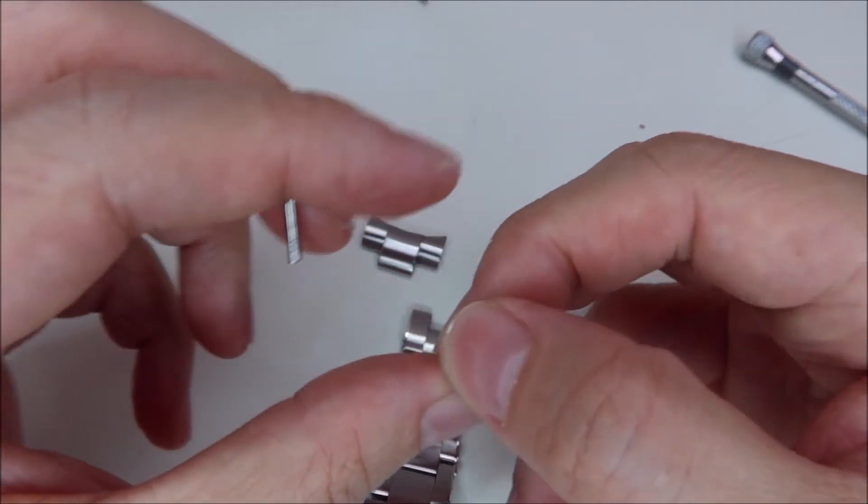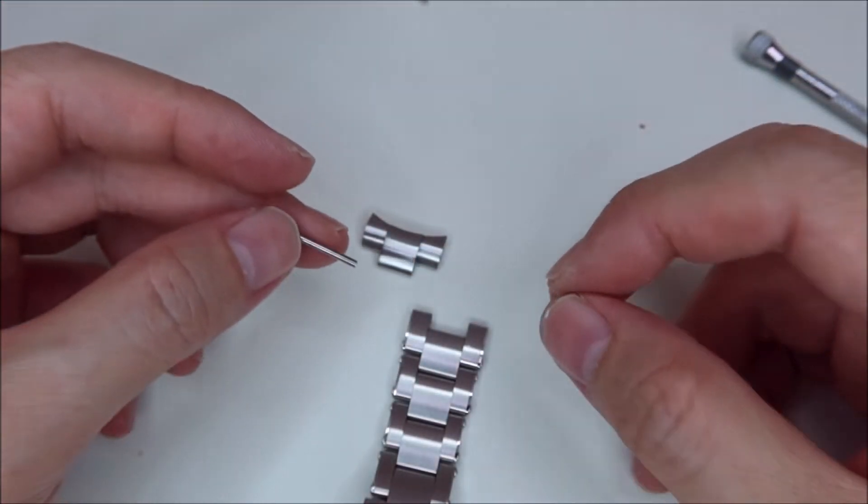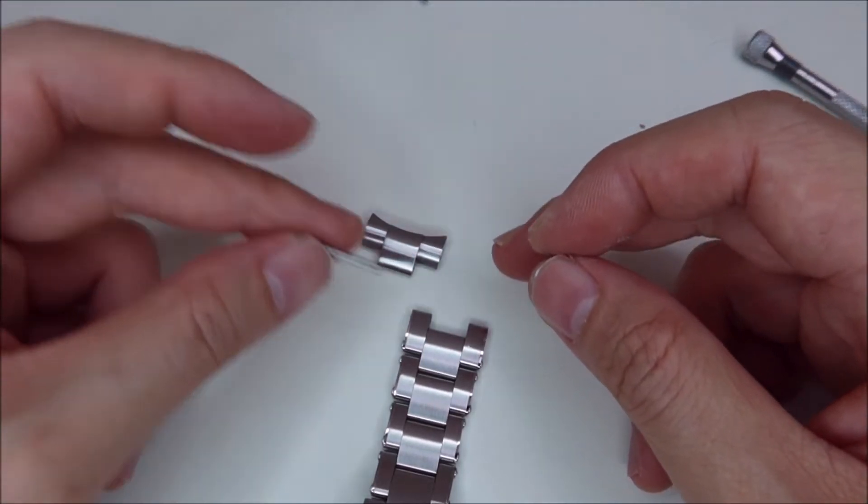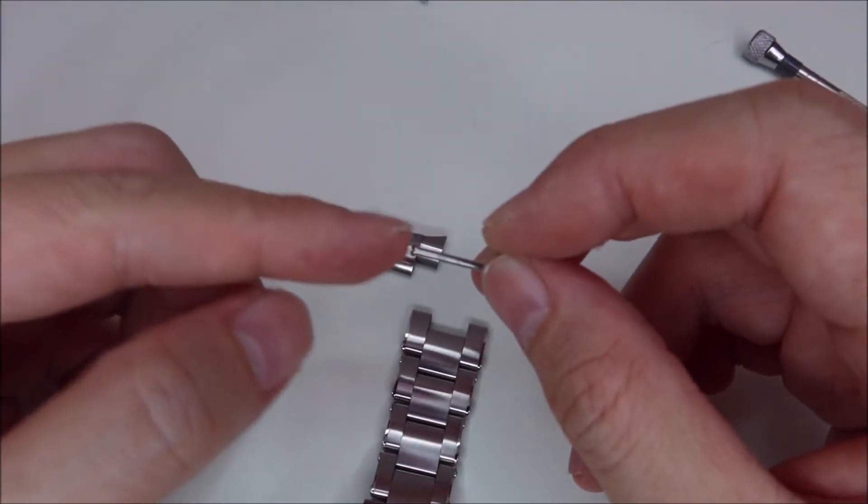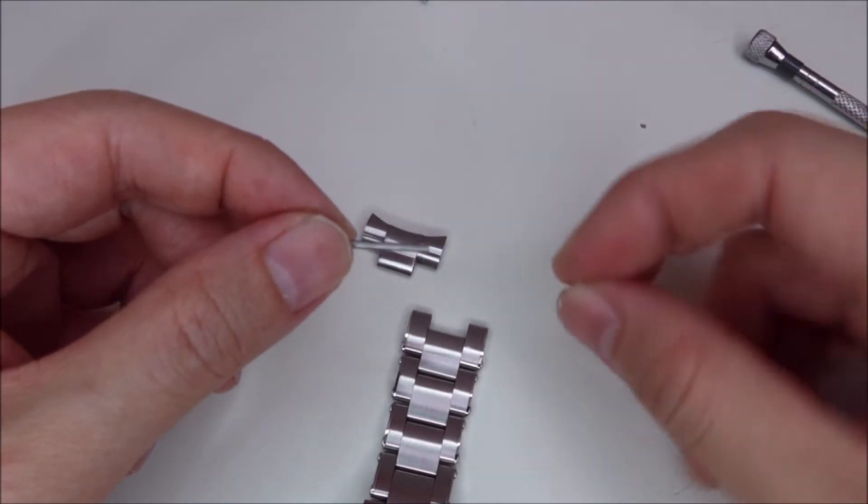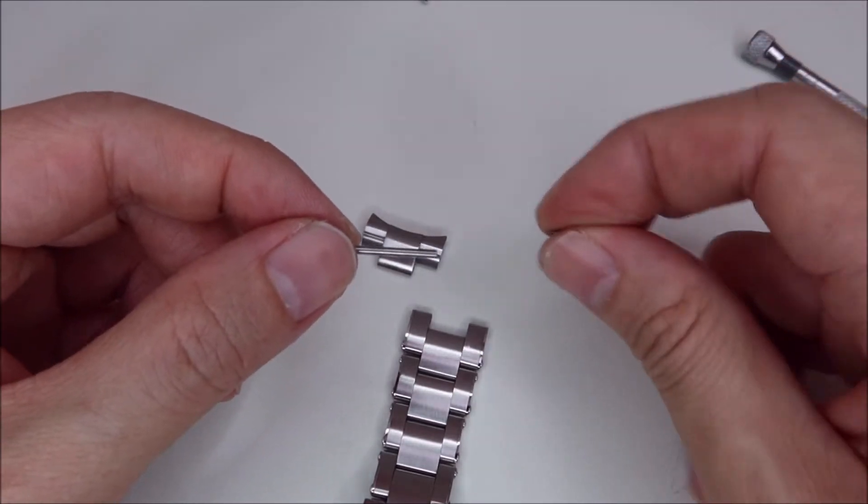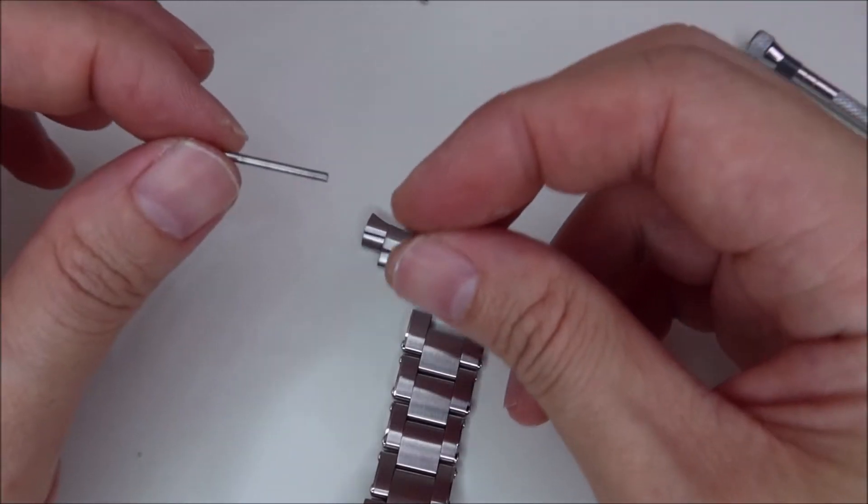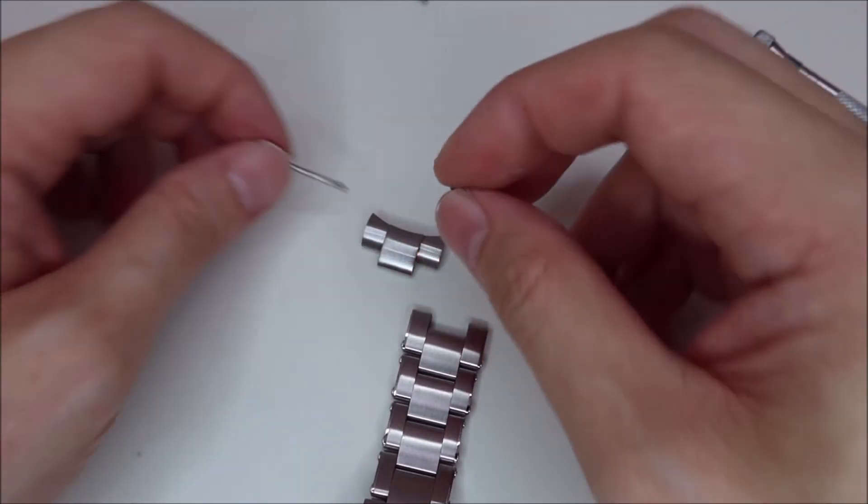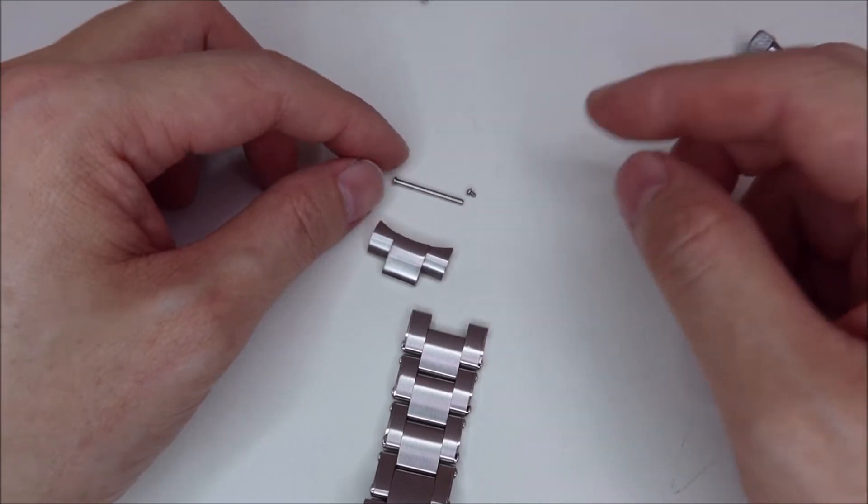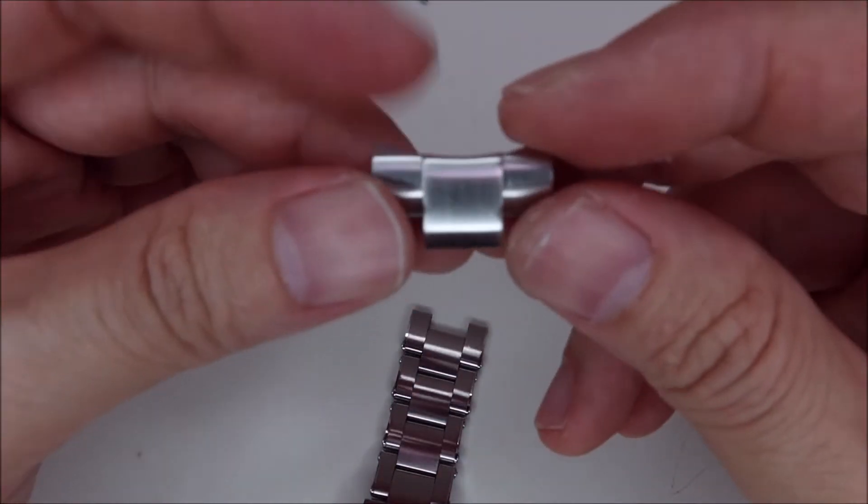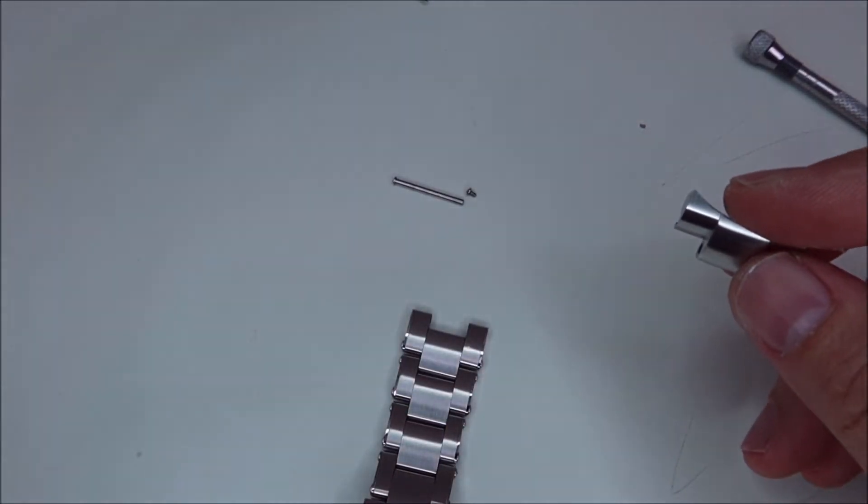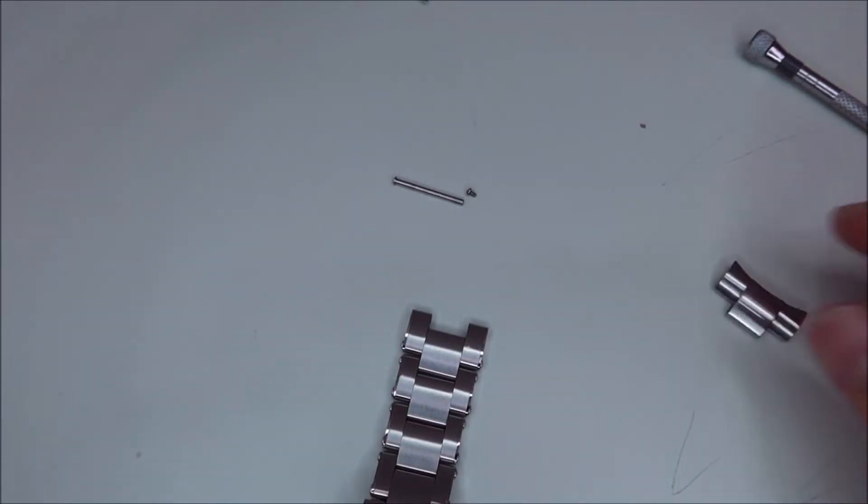So yeah, so you have to use screw, two screwdriver at the same time. One is like, you know, trying to fix one end of this. Either you fix the end here and you try to unlock here or you fix this end and you try to unlock the other side. So yeah, this is the trick. So make sure you don't lose this because that new end links, it doesn't come with this screw. So yeah, I managed to remove this. And now I'm going to remove the other side before I put back the new one. So yeah, hopefully I don't screw this up.